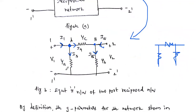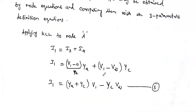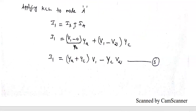I3 is the current flowing through admittance Y-A. The current equals the voltage at node A minus the reference node voltage, multiplied by the admittance. Voltage at node A is V1 and voltage at node B is V2, so I3 = (V1 − 0)·Y-A. Similarly, I4 = (V1 − V2)·Y-C, and I5 = (V2 − 0)·Y-B. Substituting into the node A equation: I1 = V1·Y-A + (V1 − V2)·Y-C.